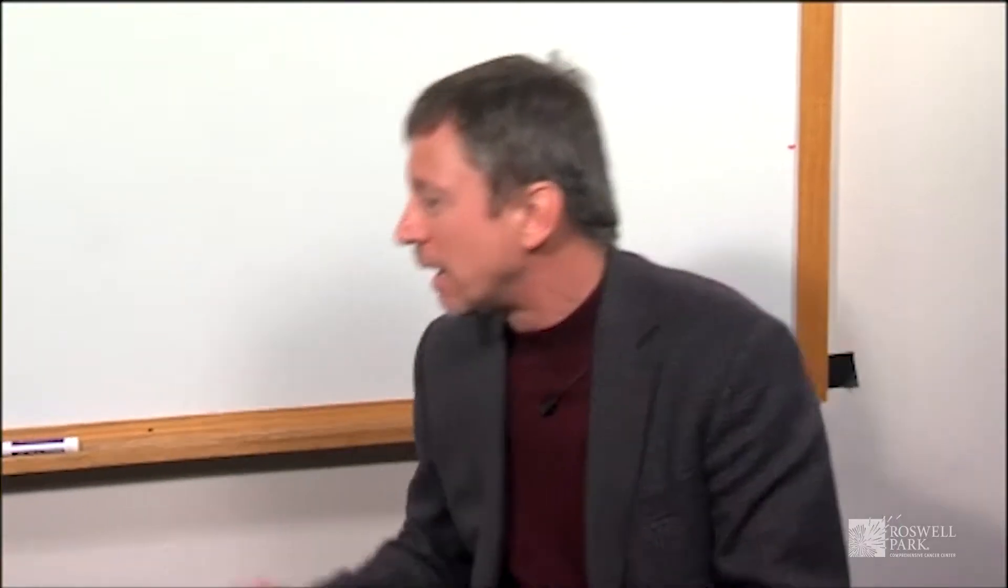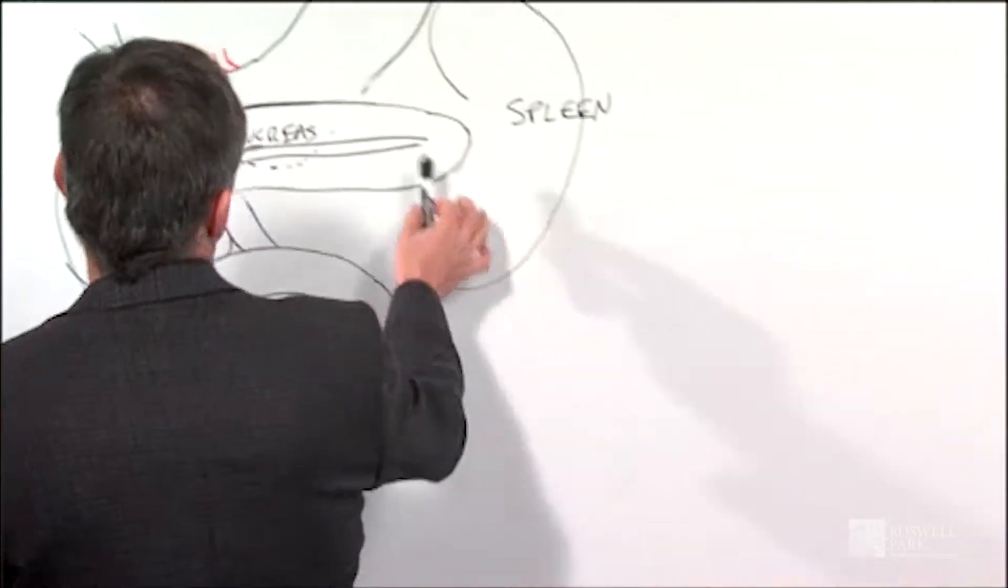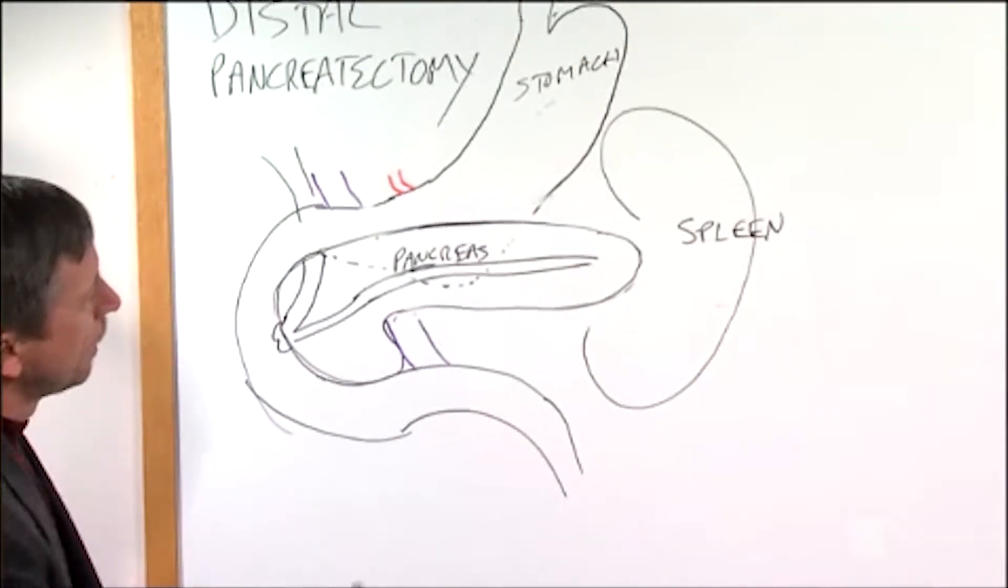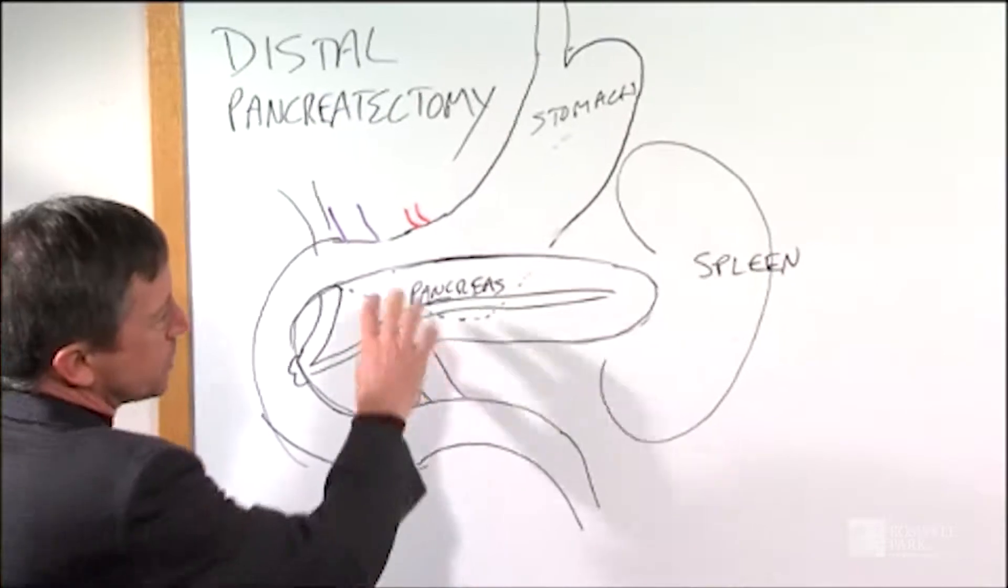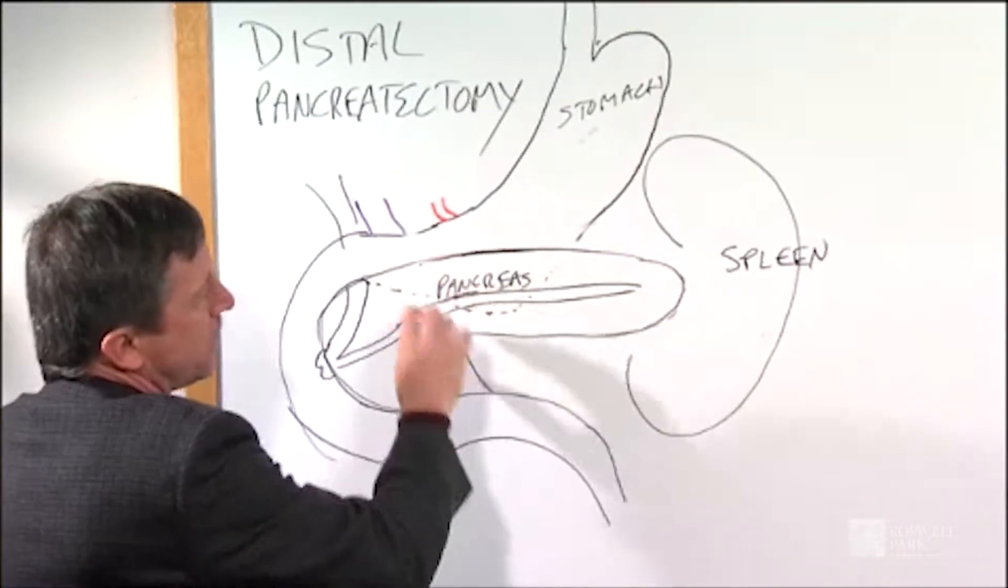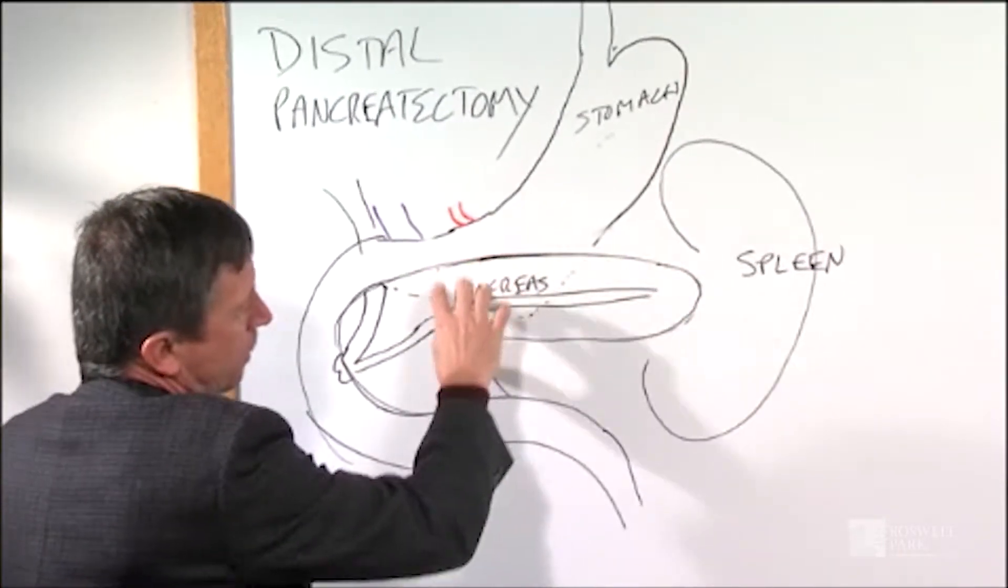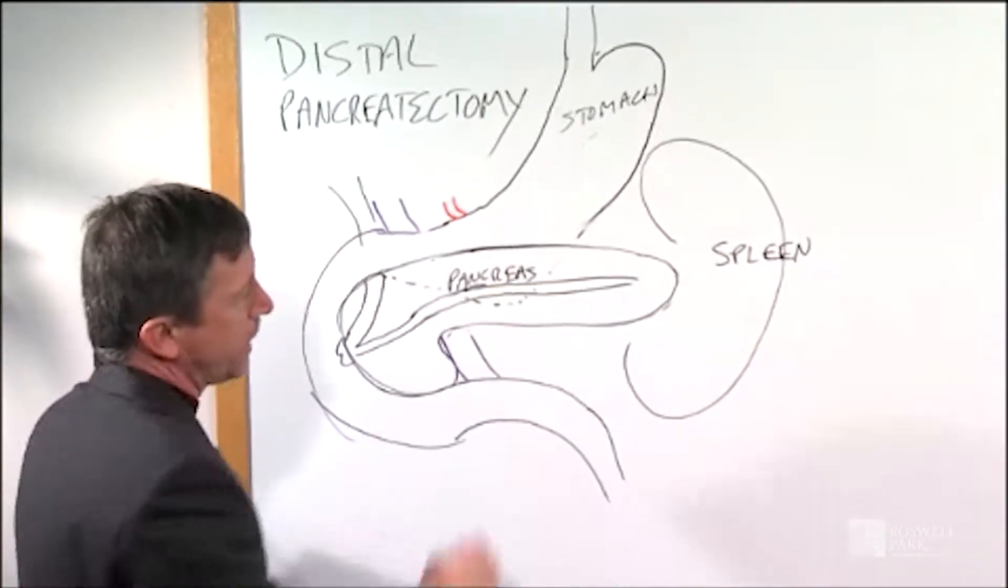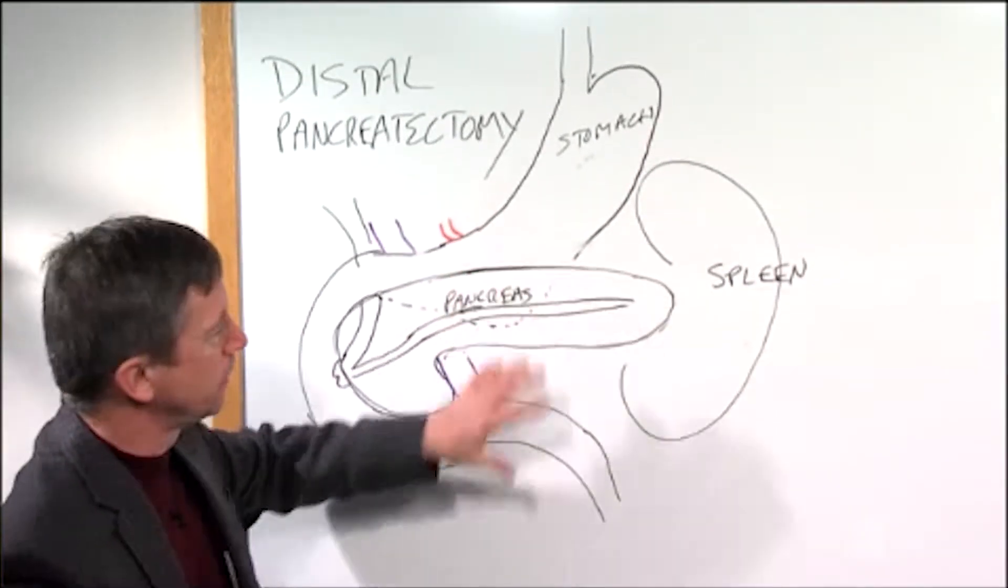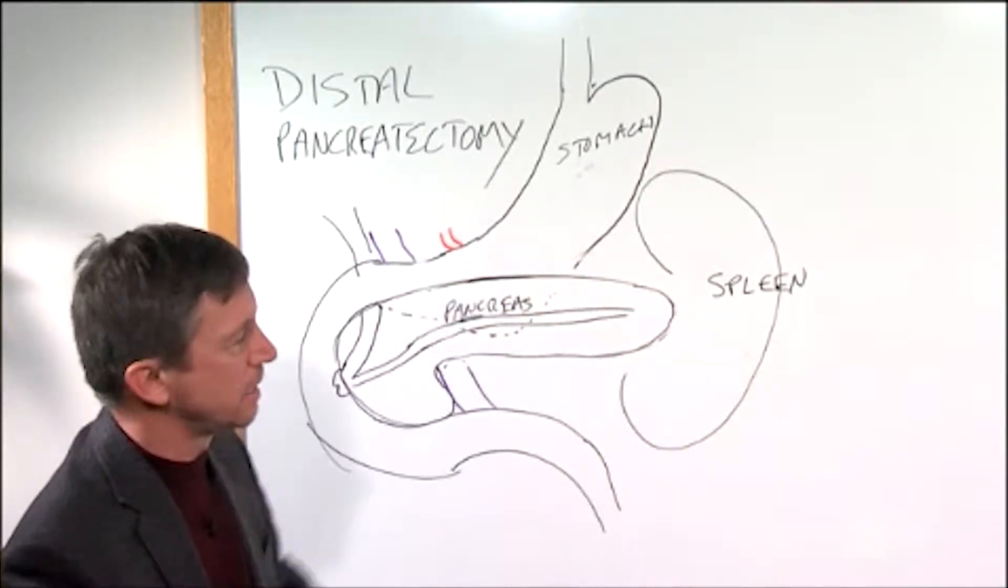Distal pancreatectomy is a procedure where you remove the left side of the pancreas, and that can be done for a number of different reasons. I'd like to show you this picture that I drew of the pancreas. The distal pancreas, which is the tail of the pancreas, is in this area here. You'll notice here the spleen and the stomach. The pancreas lies behind the stomach, and the tail of it is nestled in the spleen.